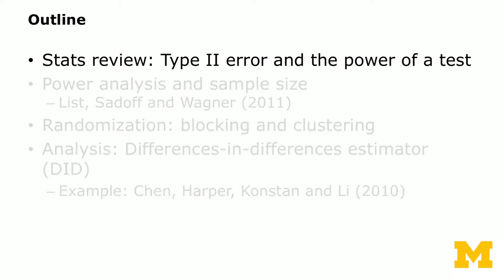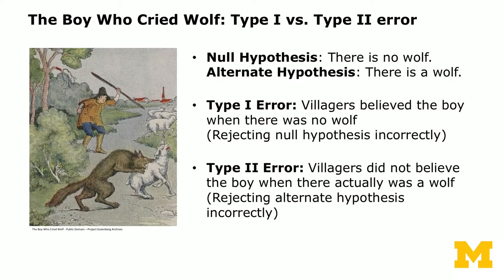The first unit, to prepare us for statistical power and sample size calculation, we're going to review some basic concepts: type one error, type two errors, and the power of a test. When I had my first statistics class, I had a hard time differentiating between type one and type two errors. But then I ran across an analogy which I thought was really good, so we're going to bring that into our lecture.